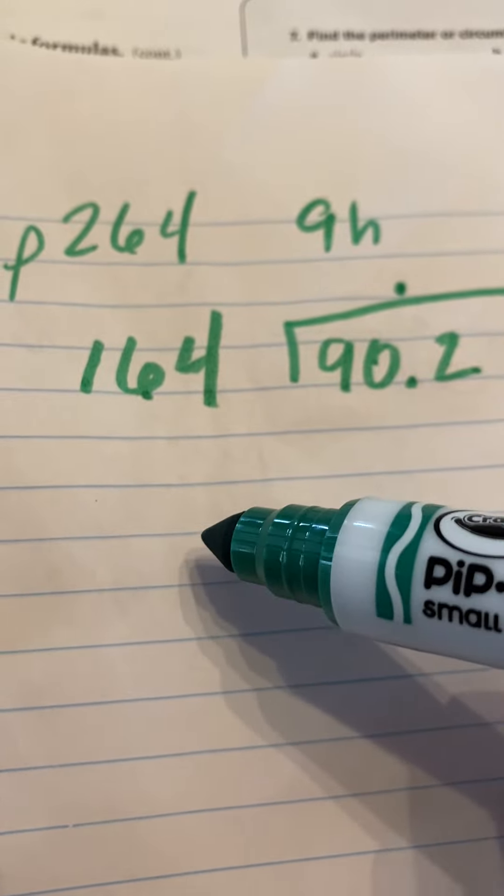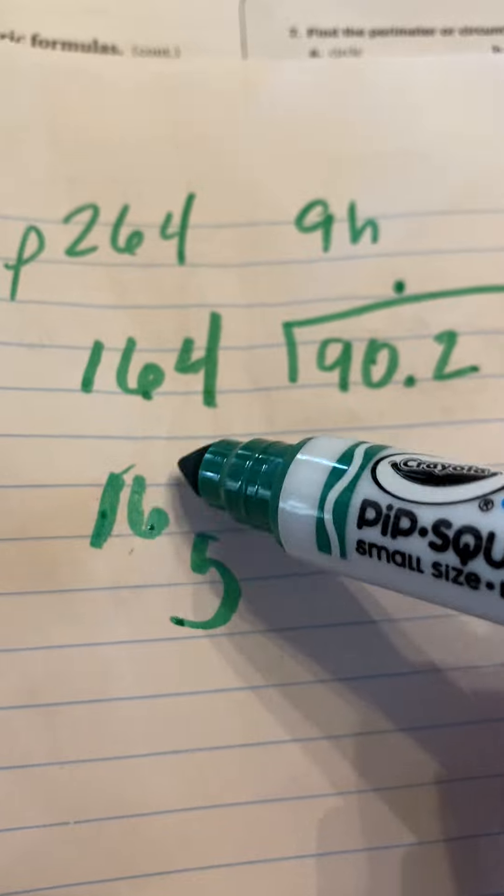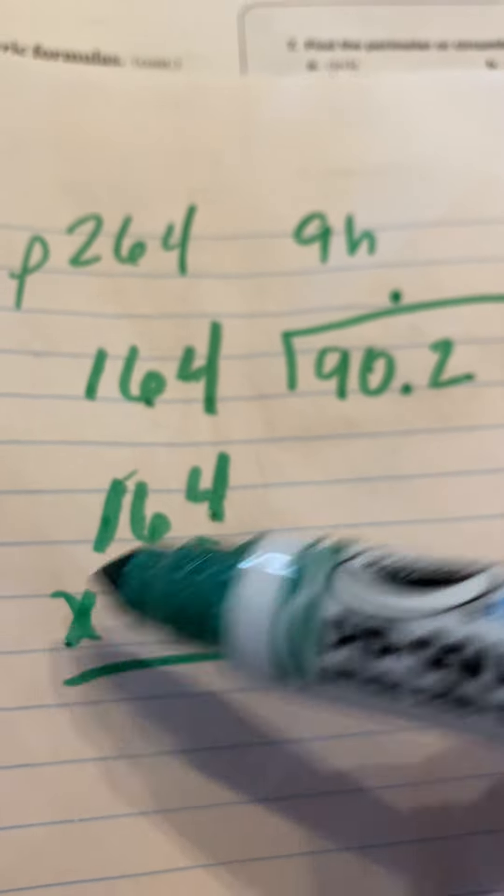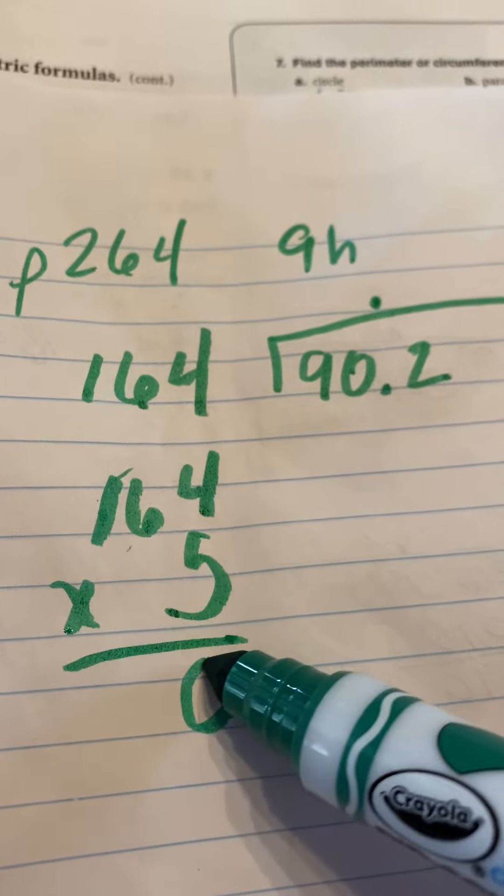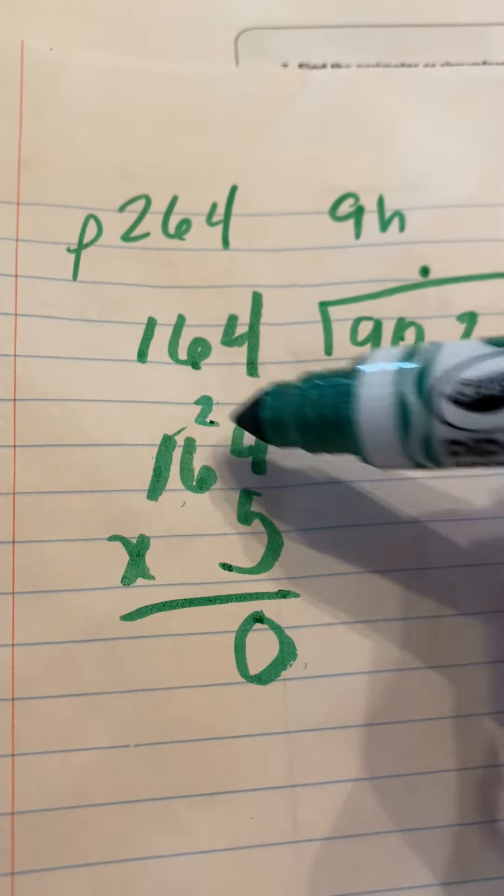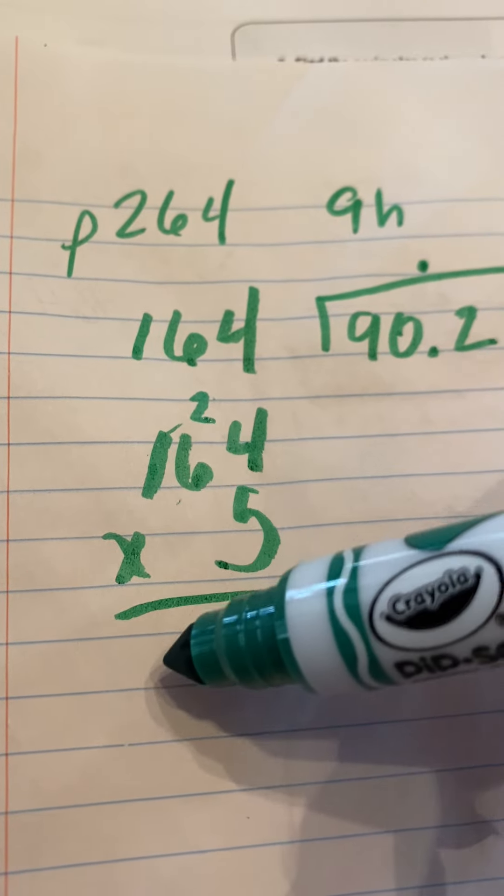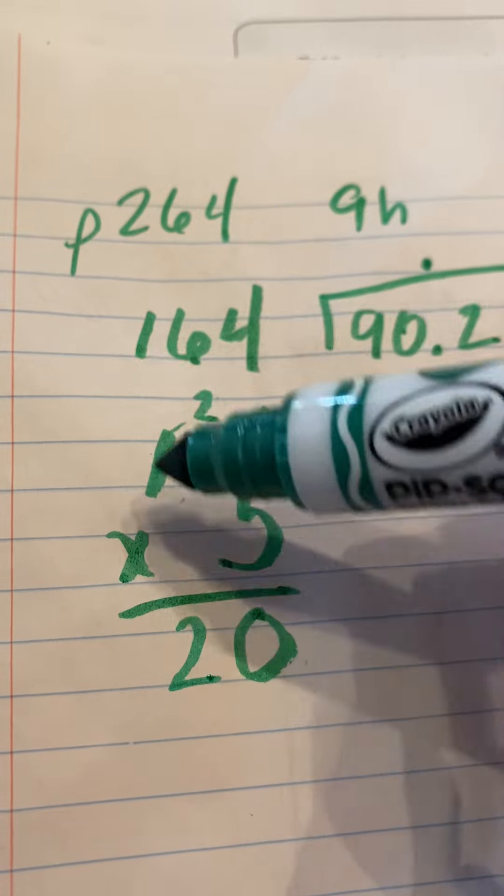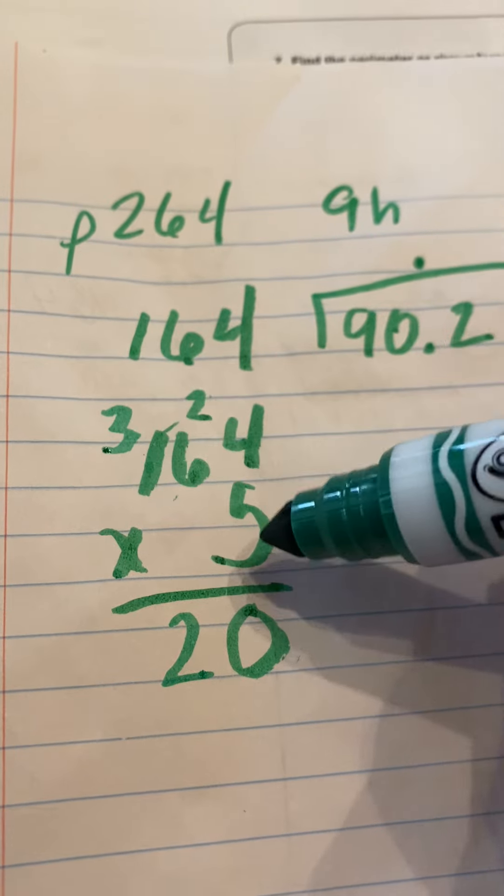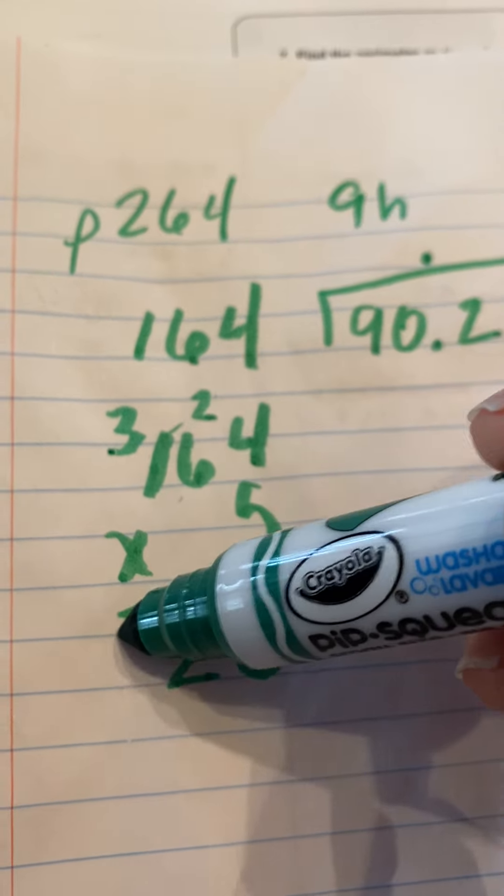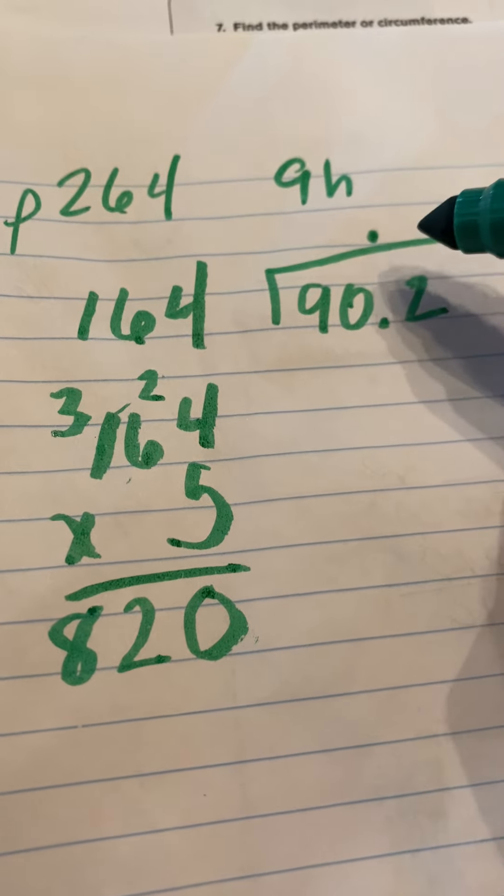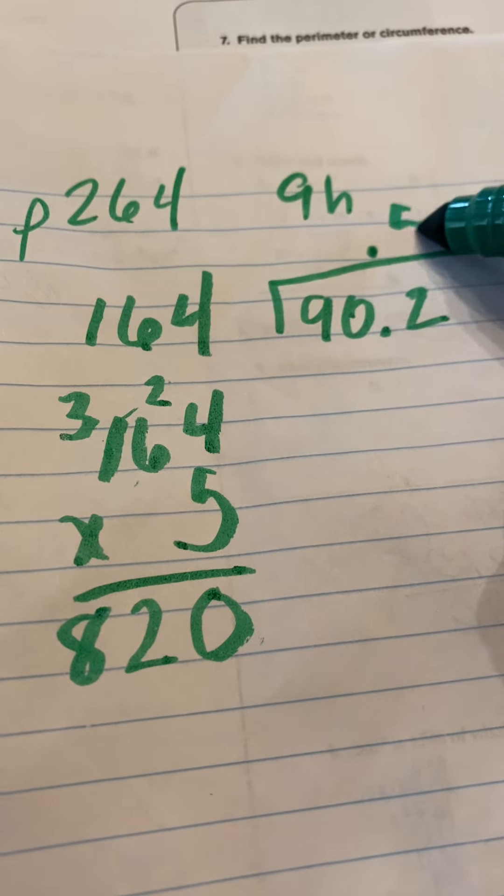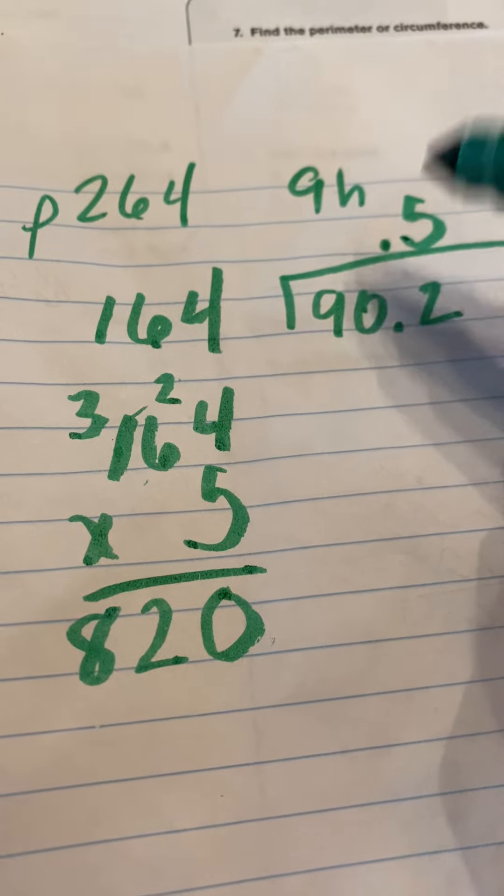So let's figure that out. I'm going to say 16 would go into 90 about maybe five times. So let's try 164 times 5 and see what we get. Five times 6 is 30, plus the 2. Five, six, seven, eight. Sounds like a good number.